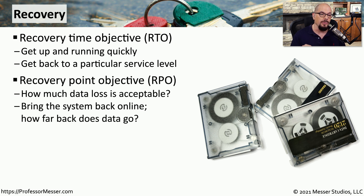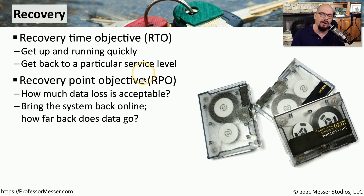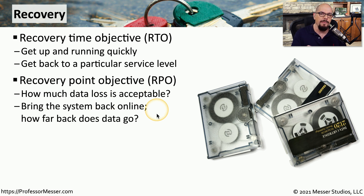Often this is used in conjunction with an RPO, or a recovery point objective. This means that we would set an objective to meet a certain set of minimum requirements to get a system up and running. This means that part of it may be available, but part of it may also be unavailable. The question might be: how much unavailability is acceptable? We need to understand how much information we have available to us at any particular time, and if we bring the system back online, how far back or how available will that data be?